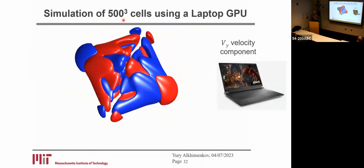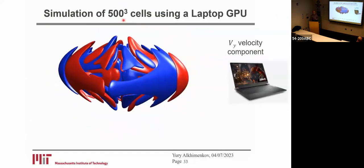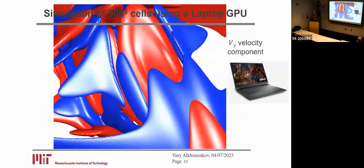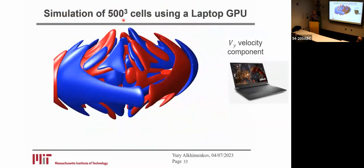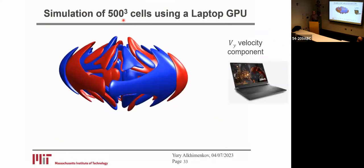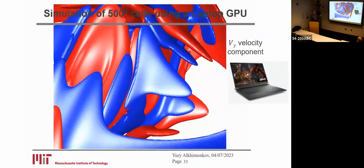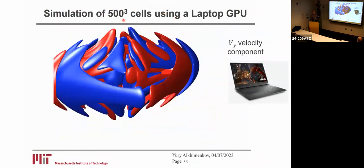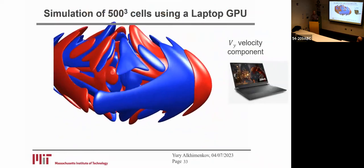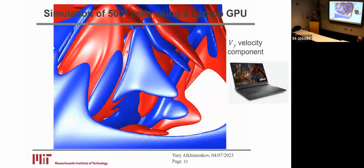Here, for example, you can see a final snapshot of the velocity field in the poroelastic media. You see red and blue domains representing positive and negative velocity components.